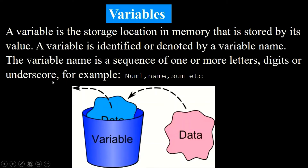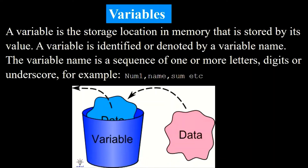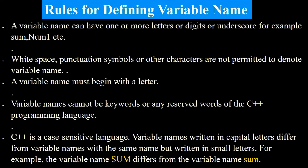The variable name is a sequence of one or more letters, digits, or underscores — for example, number, name, some, etc. We can see in this picture that data is stored in a variable. It is just like a bucket or a bowl; the bowl is empty and you store different data in it, and after that you can remove that data from the bucket. So a variable is a place that can store values.